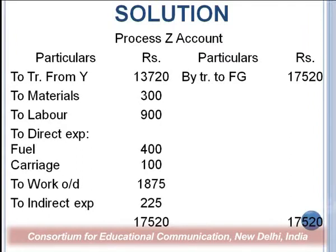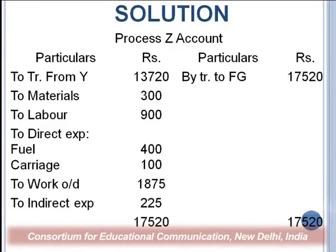Finally, we prepare the process Z account. The output of process Y — 13720 — becomes the input of process Z and is transferred in. Additional material, labour, and overhead costs are incurred in process Z while processing. The indirect expenses are also apportioned proportionately — 225 — in proportion of direct wages of X, Y, Z. The total comes to 17520, which becomes the finished goods. This 17520 is the cost of finished goods.